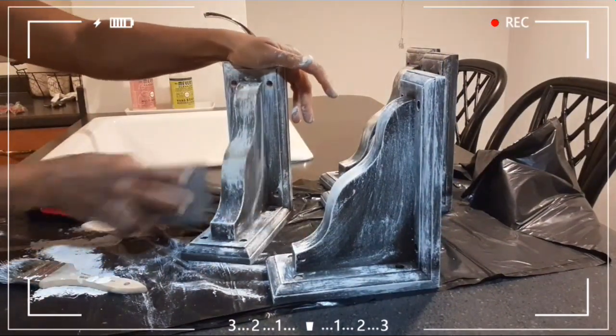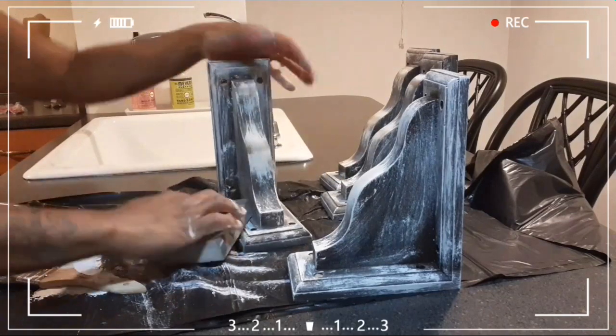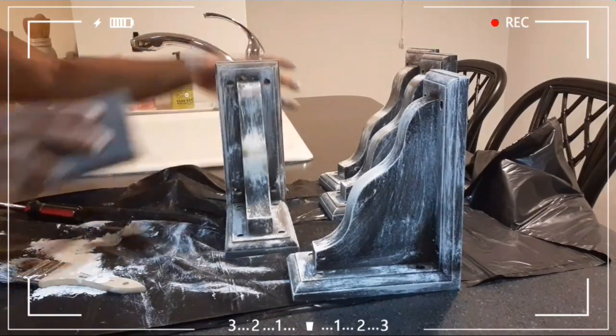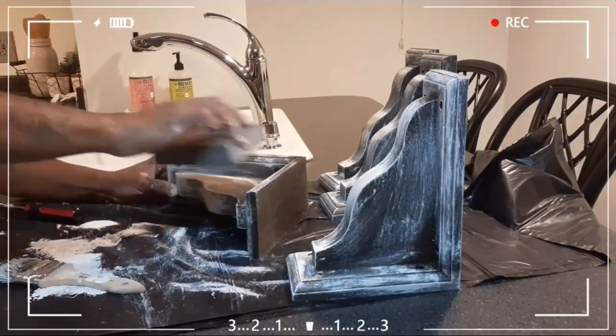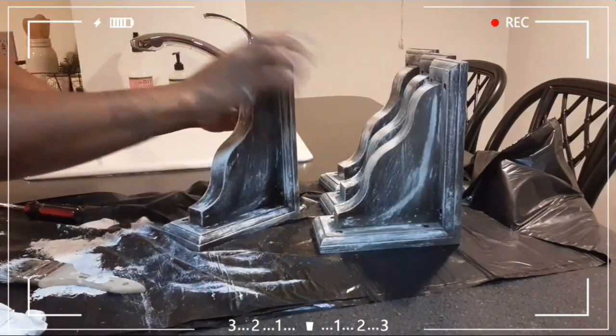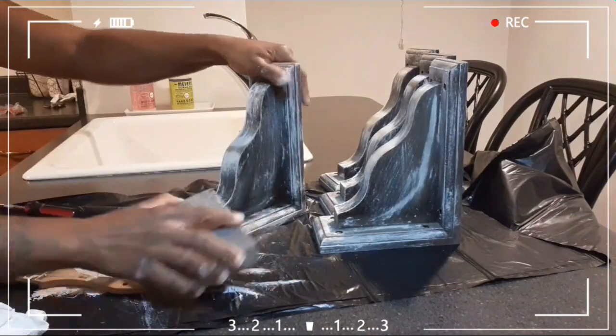Once I did that, I went ahead and distressed all my corbels just to make it look like it blended in, like it came like this. I didn't want it like the paint was just sitting on top of them, and I made sure I wiped all of them down after I got done.